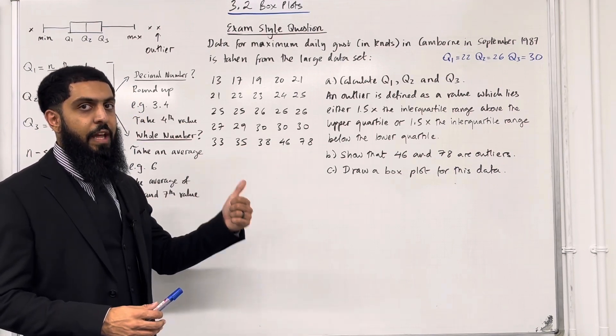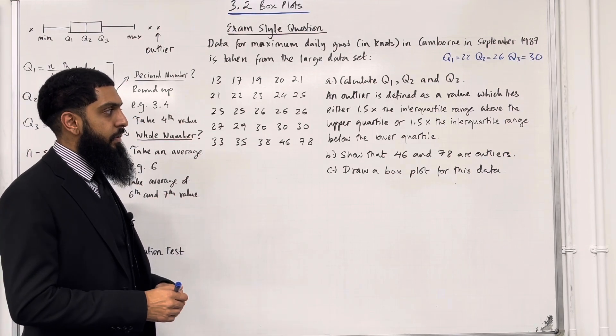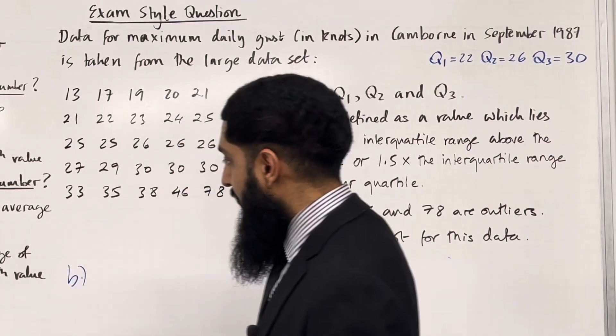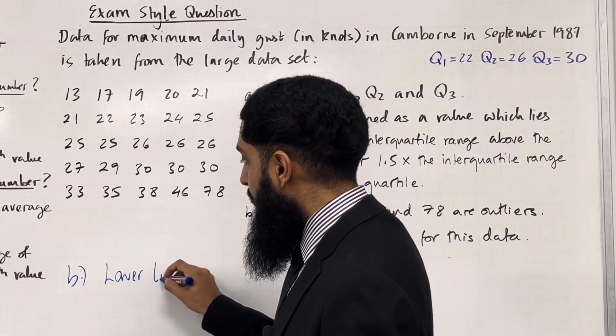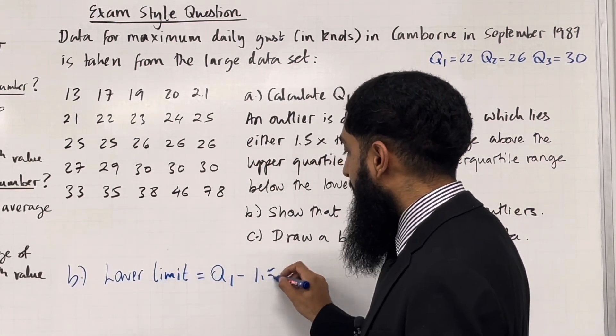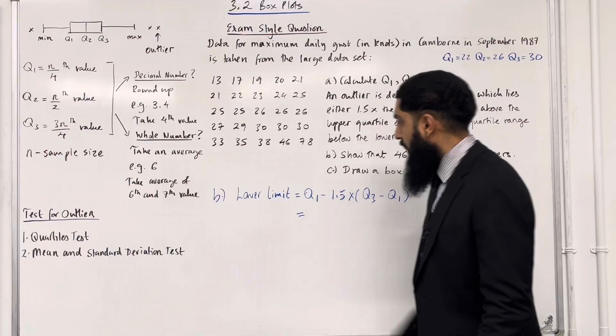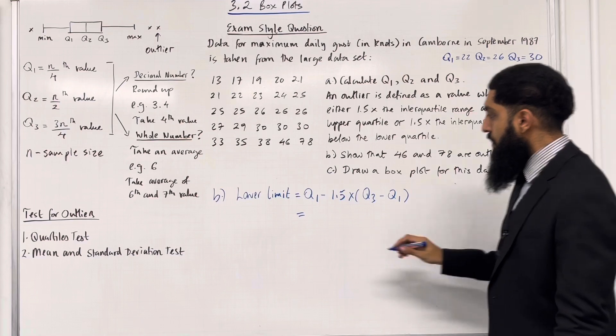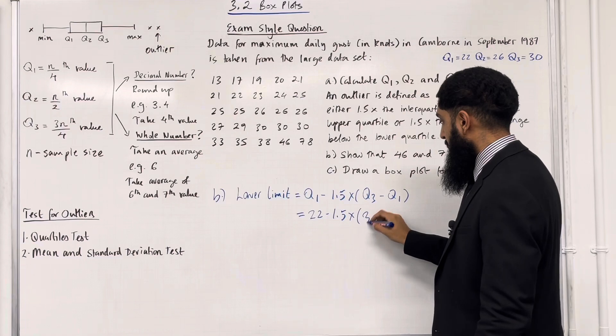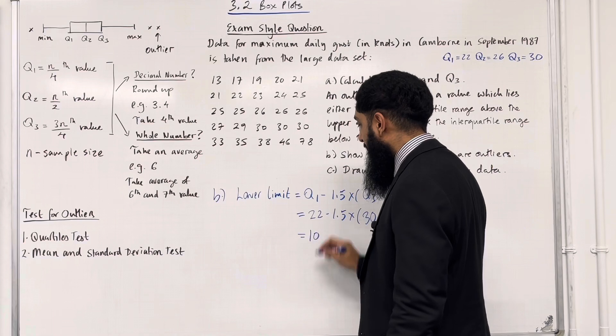We have something called the upper limit and the lower limit. Part B: show that 46 and 78 are outliers. First, I'm going to calculate the lower limit, which is given by Q1 minus 1.5 times the interquartile range (Q3 minus Q1). So that's 22 minus 1.5 times (30 minus 22), which equals 10.